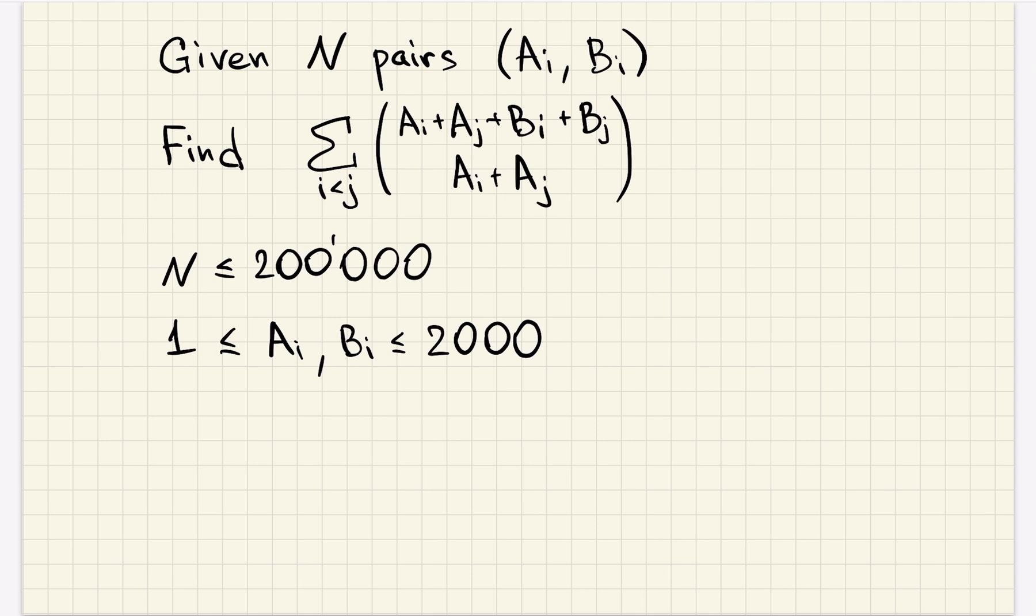Let's look at the statement. Technically in the statement there is something about skewers and barbecue and stuff, but what you should read in the statement is that you are given n pairs of numbers (a_i, b_i), and we want to calculate the sum over all pairs i, j such that i is smaller than j of this binomial coefficient: choose from (a_i + a_j + b_i + b_j) choose (a_i + a_j). n is big, so we cannot just try all pairs, but a and b are rather small.